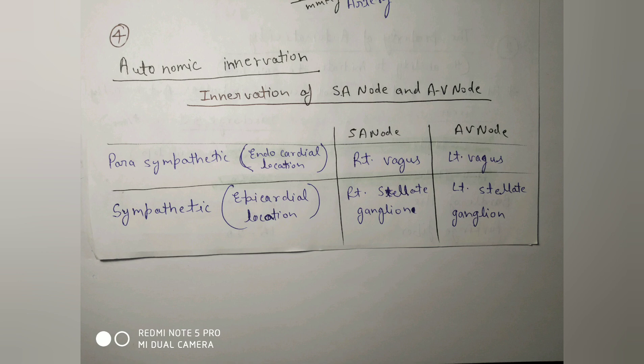The next topic is autonomic innervation. We have two types: parasympathetic and sympathetic. Parasympathetic has an endocardial location inside the heart — that is the right vagus and left vagus nerves. Vagus innervation decreases heart rate. Sympathetic innervation has an epicardial location, outside the heart.